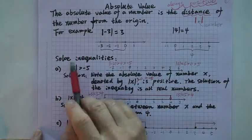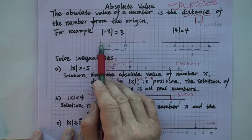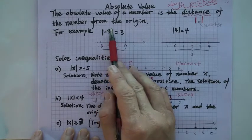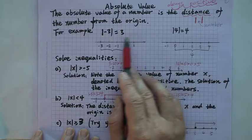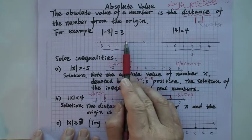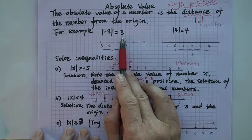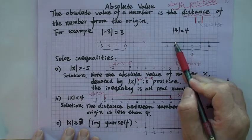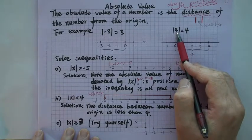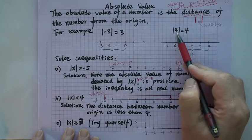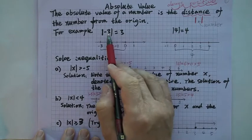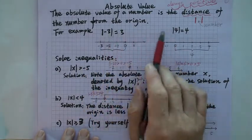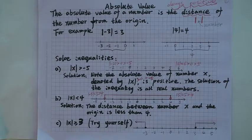Here is an example. You see negative 3. The distance between negative 3 and 0 is denoted by two vertical lines around the number, and that distance is 3 — it's always positive. Distance can never be negative. Now what's the distance between 4 and the origin? The absolute value of 4 is just positive 4. Whatever number you plug in — positive or negative — you always get a positive result.